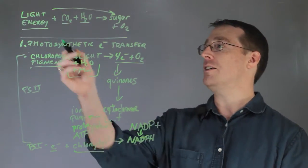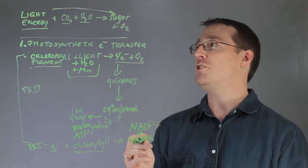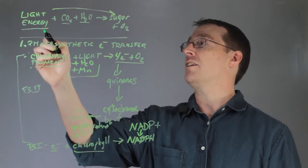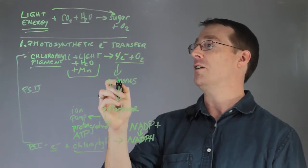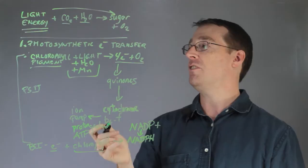Photosynthesis, outlined here, is a two-step procedure that converts light energy into sugar with oxygen as a byproduct in plant cells.